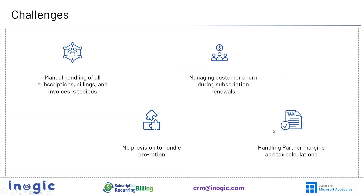Let's look at the challenges organizations generally face while handling subscriptions manually. Manual handling of all subscriptions, billings, and invoices is a really tedious process, and the chance of human error is very high. Managing customer churn during subscription renewals is a big task. There is also virtually no provision to handle proration, and handling partner margins and tax calculations adds further complexity.